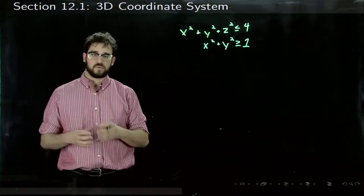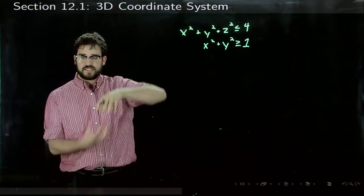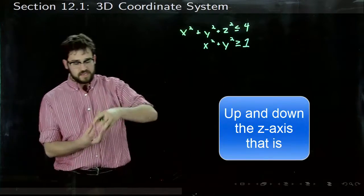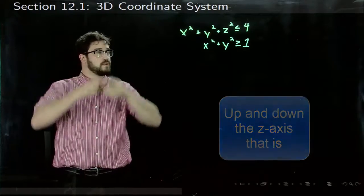If we just think of x²+y², z could be anything. So it should look like a cylinder moving up and down, because we have a circle and we can move up and down the z-axis.